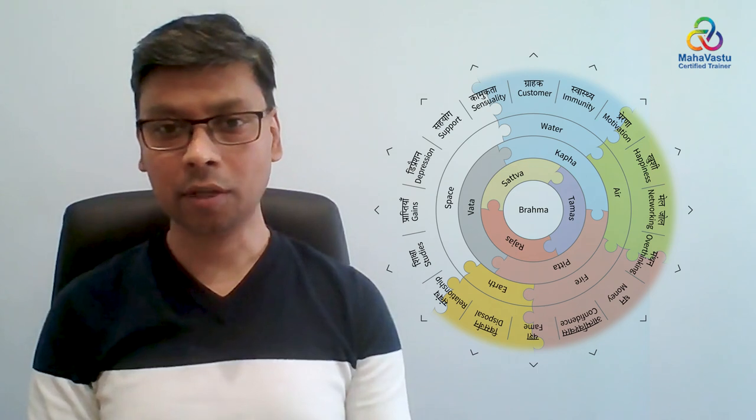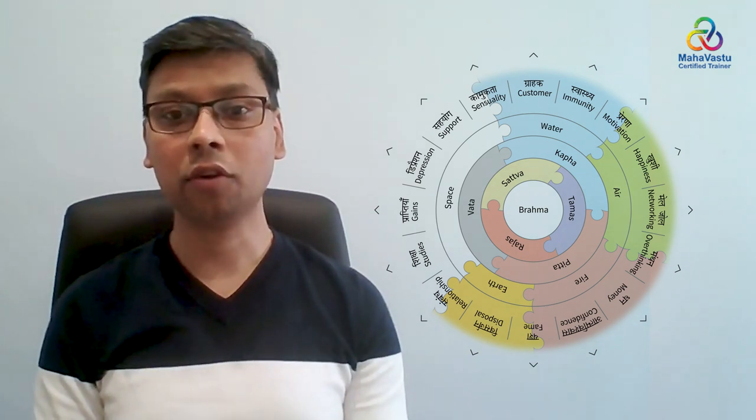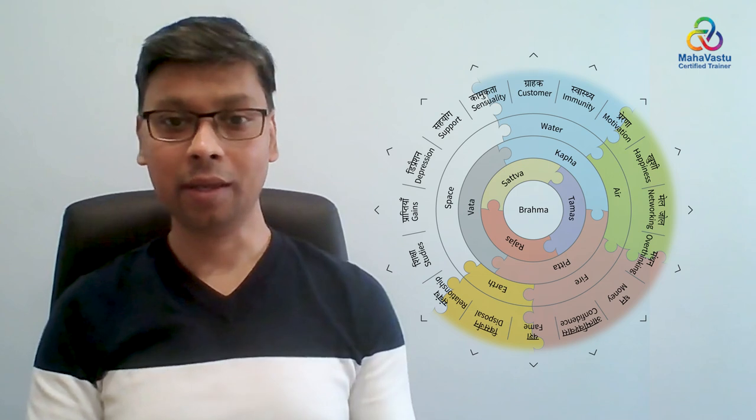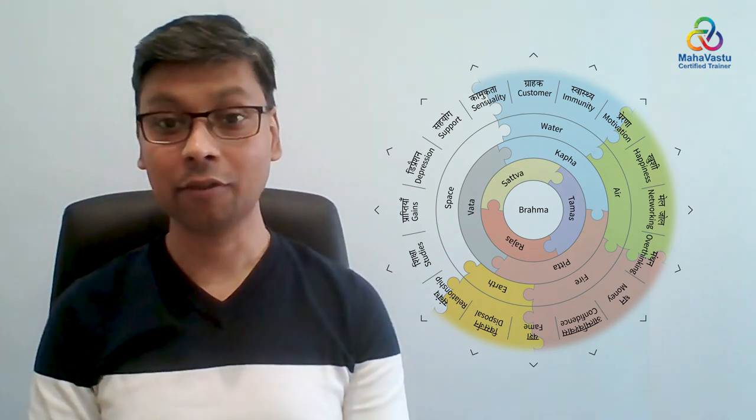In Mahavastu methodology, we work on 16 zones. Whenever you hear about 16 zones, it's nothing, it's just Mahavastu, followed by five elements. Five elements again: air, fire, water, space and earth.